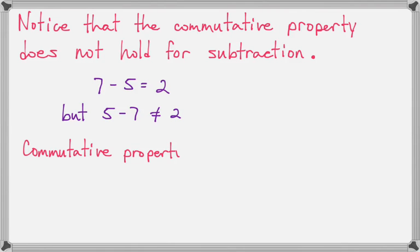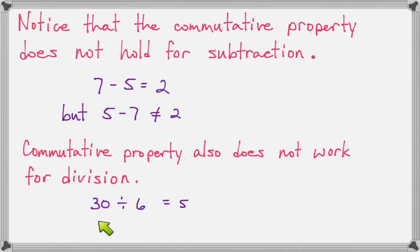And the same for division. We don't have a commutative property for division. If I have $30 to divide among 6 people, everybody gets $5. But if I have $6 to divide among 30 people, everybody can't have $5. So these two don't say the same thing. Changing the order of division changes the answer. Changing the order of subtraction changes the answer.